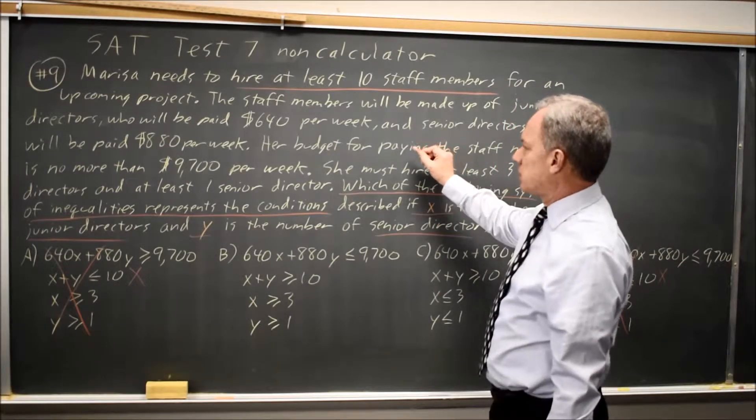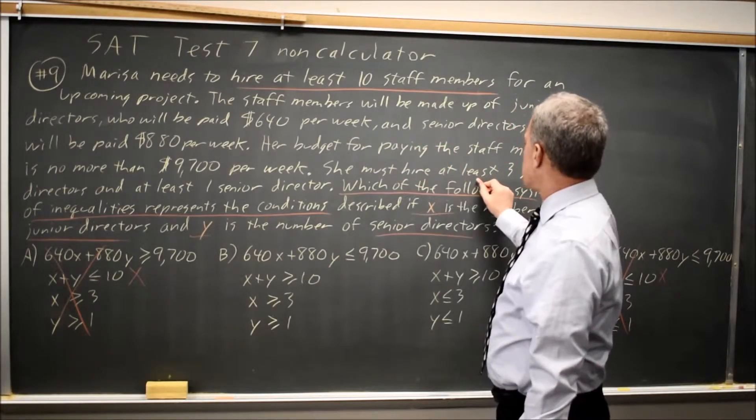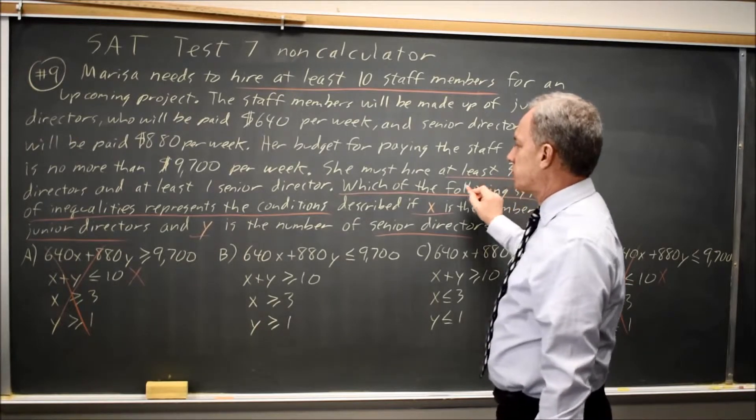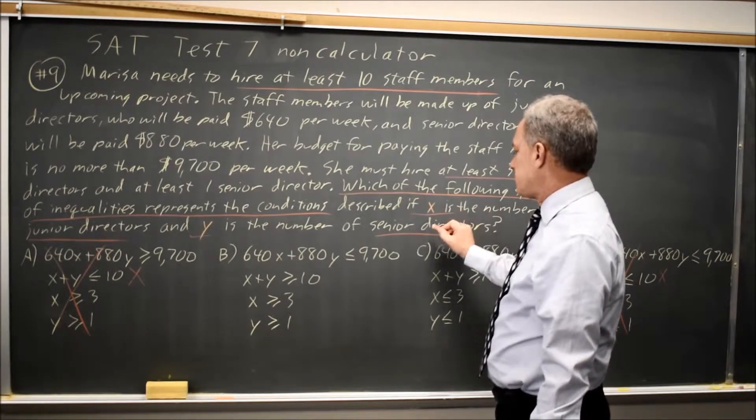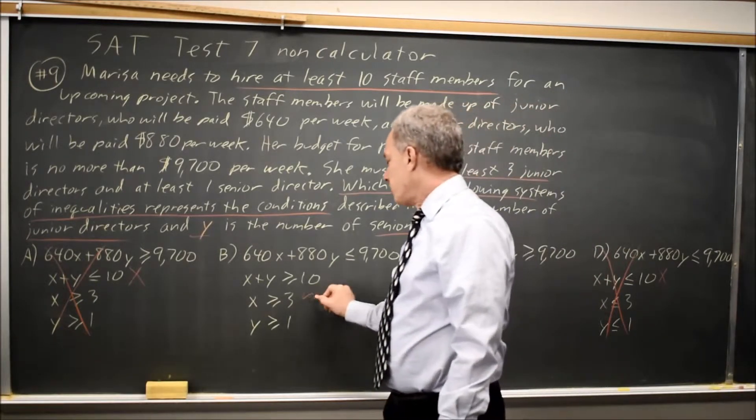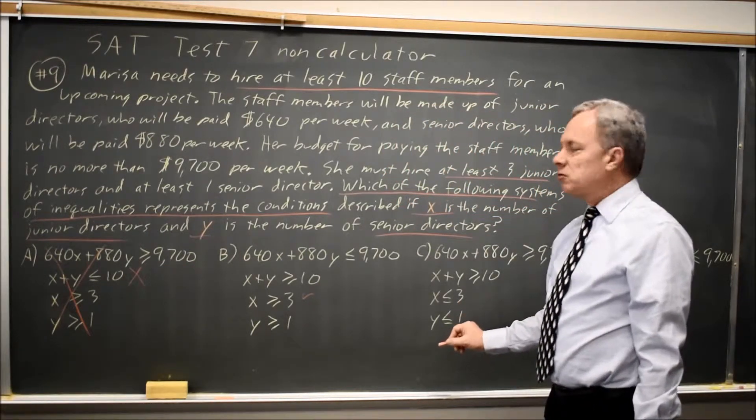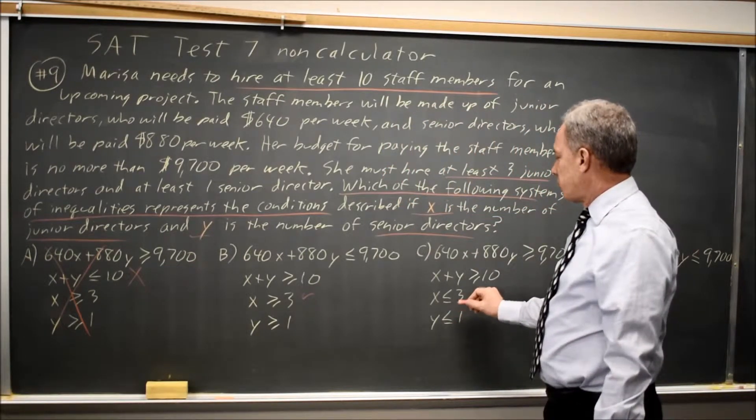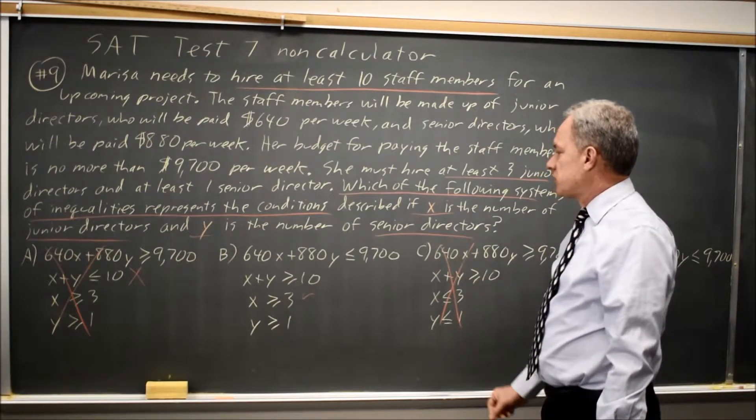We've also said she must hire at least three junior directors, where junior directors are X. X greater than or equal to 3 works. X less than or equal to 3 would mean no more than 3 rather than at least 3. So choice C is wrong.